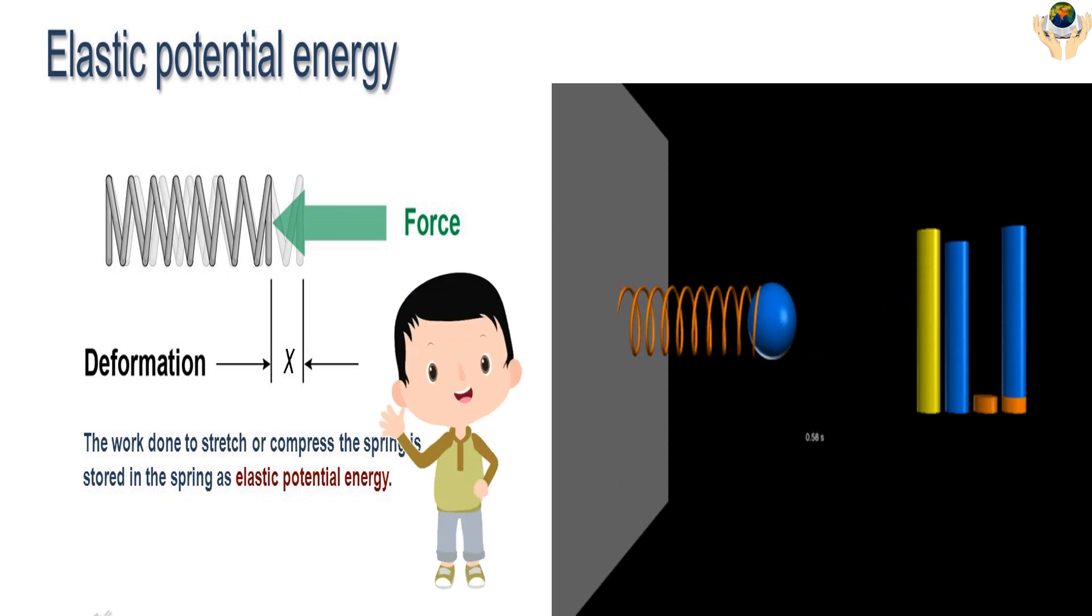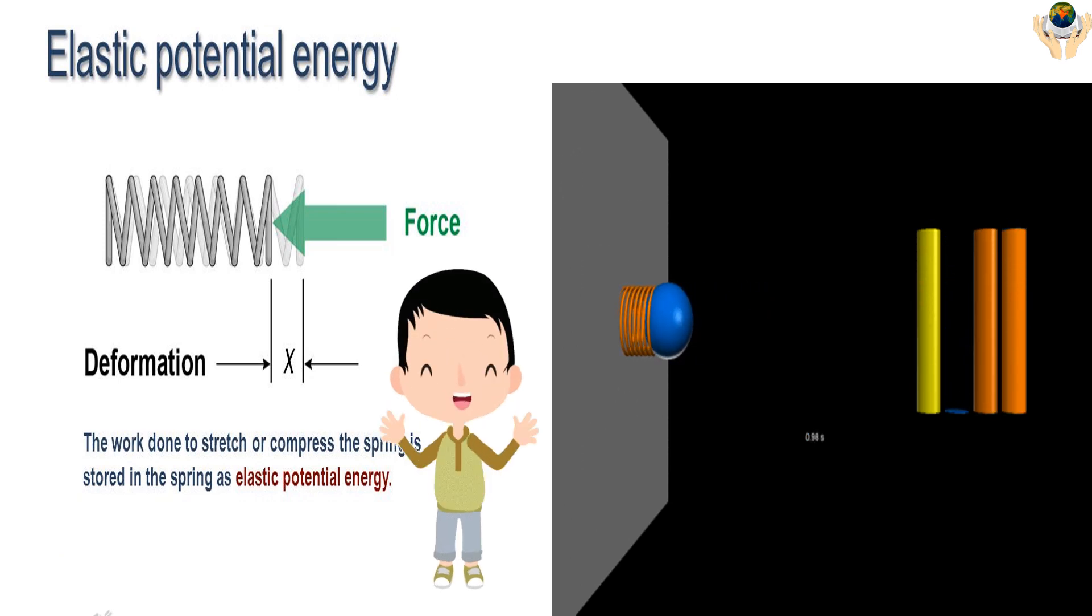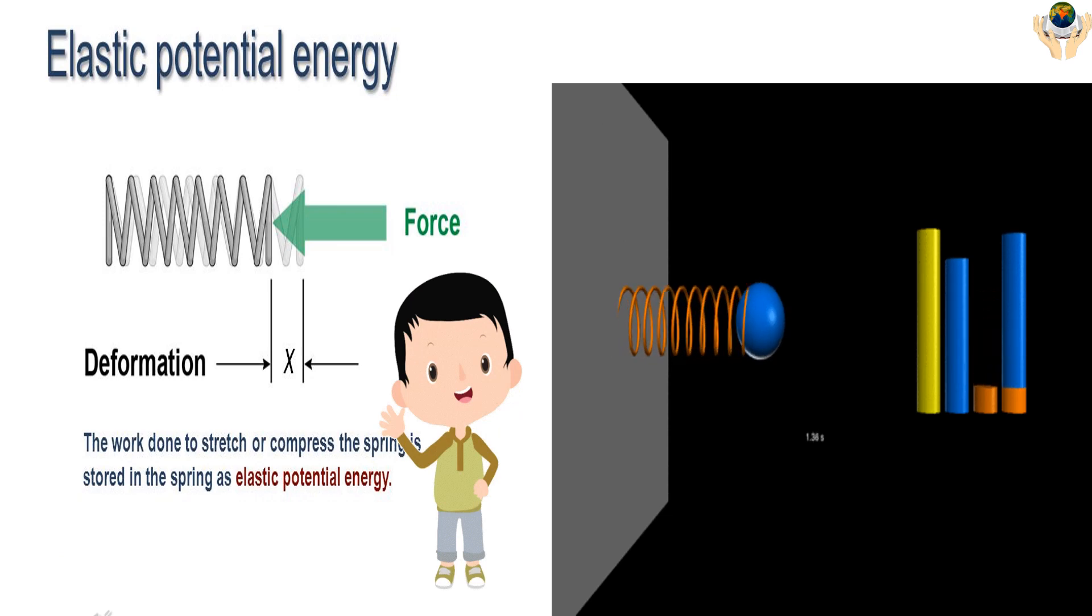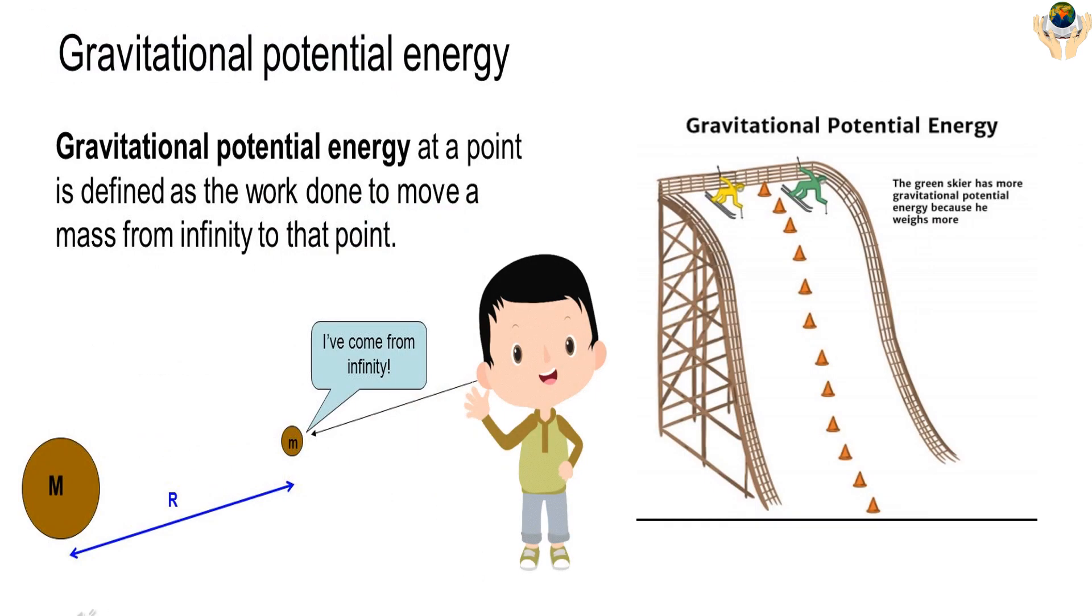Gravitational potential energy. Gravitational potential energy at a point is defined as the work done to move a mass from infinite distance to that point.